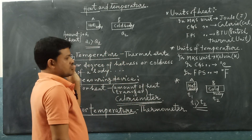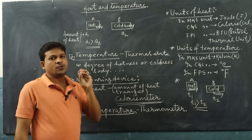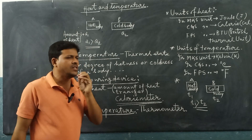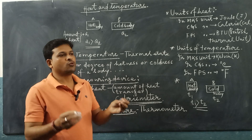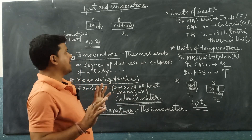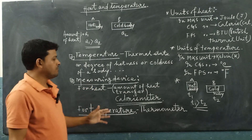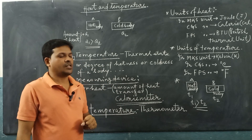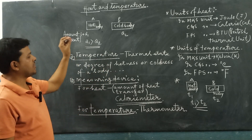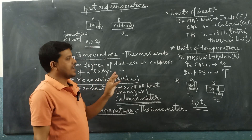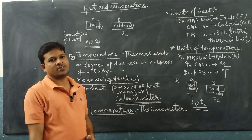If we remember from what we learned at the class 5 level, one use of heat energy — heat energy is used to cook food. This is the relation between heat and temperature. These are the measuring devices for heat and temperature, and these are the units of heat and temperature. From this, you can easily write the differences between heat and temperature.